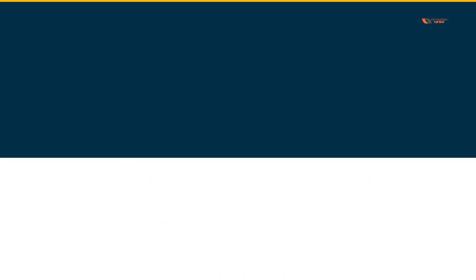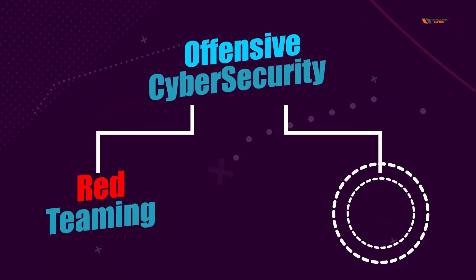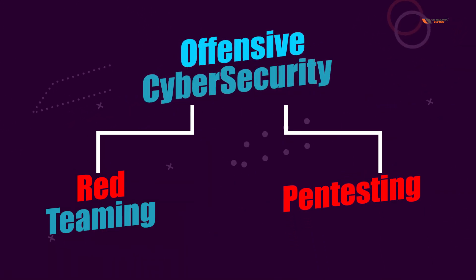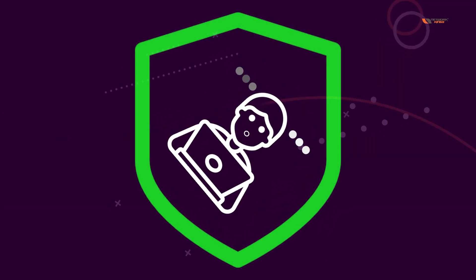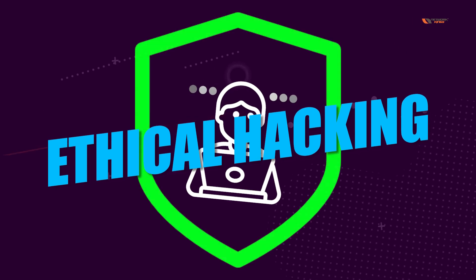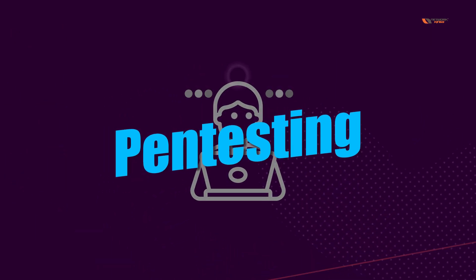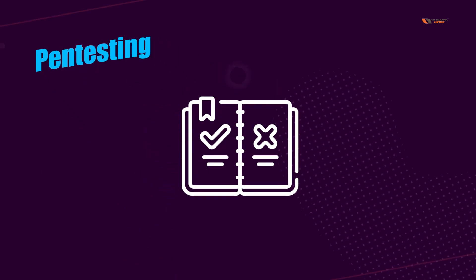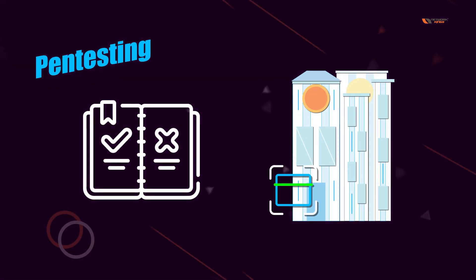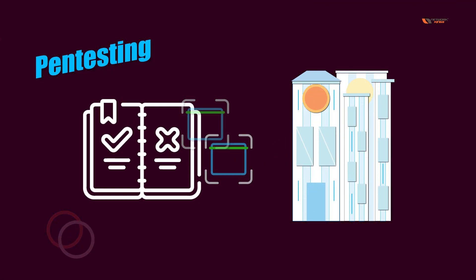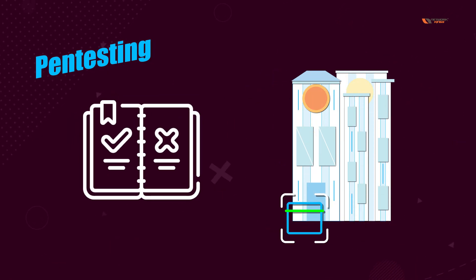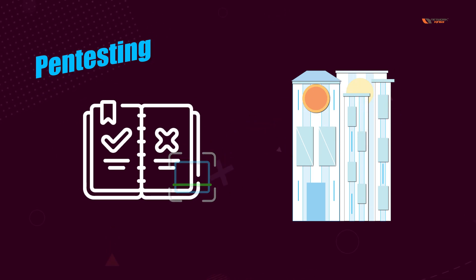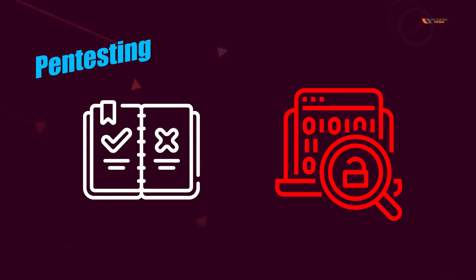A popular subdomain is pentesting — sometimes people refer to it as ethical hacking, but the technical term we should be using is pentesting. In pentesting, you have to follow the rules of engagement; you are already told by the client what you can test and what you cannot. You follow a pattern and you will also be finding vulnerabilities.